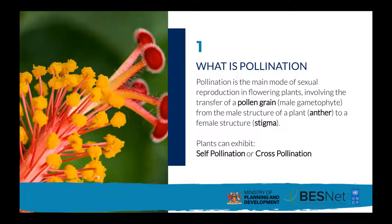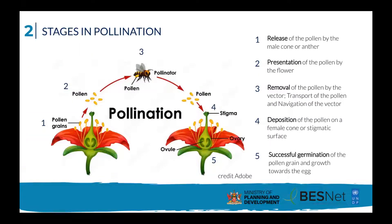Pollination occurs in the angiosperms, or flowering plants, and in the gymnosperms. In this presentation I will focus primarily on flowering plants. The event we know as pollination can itself be broken down into several stages, listed in chronological order. First, the release of pollen by the male cone in gymnosperms, or the anther in angiosperms. Second, the presentation or availability of the pollen by the flower. Third, the removal of the pollen by a vector or agent, and its subsequent transport by the vector — in this case, a bee.